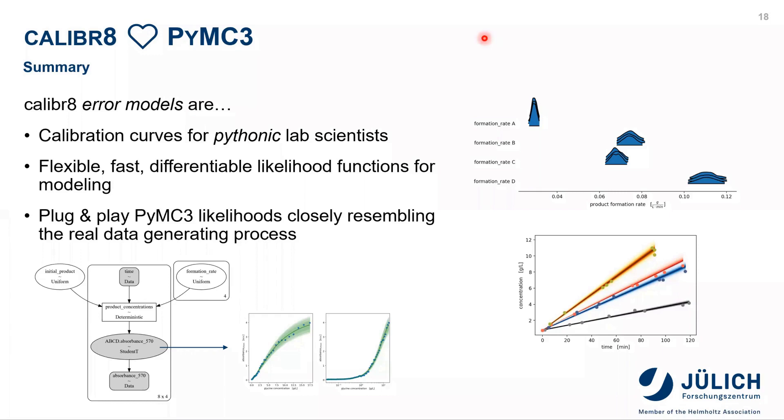Now that we've seen the code demonstration in Jupyter Notebook, let's summarize what we've learned so far about Calibrate. Calibrate error models can serve as calibration curves for all those lab scientists who want to do their data analysis the Pythonic way. At the same time, they can be used as flexible, fast and differentiable likelihood functions for modeling. We've demonstrated this with PyMC3 process models, and you could see how the likelihood methods can be used in a plug-and-play fashion. At the same time, they closely mimic the real data generating process.